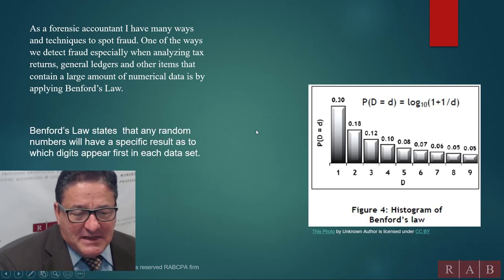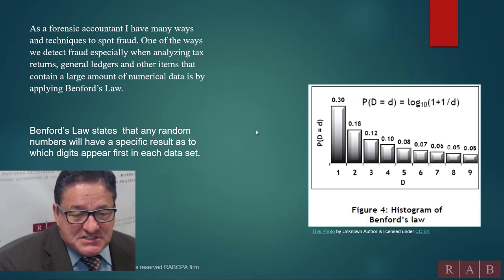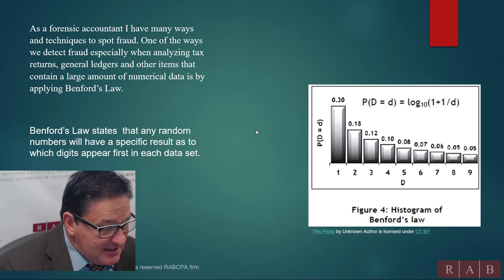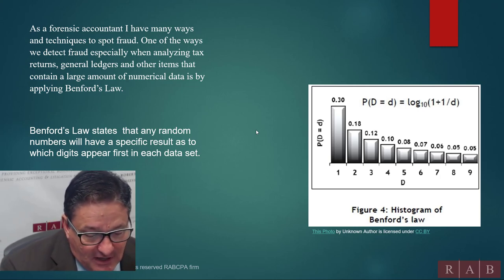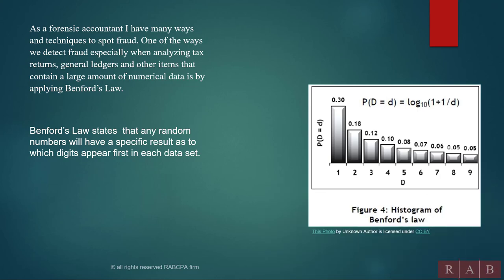And what the law basically states is that any random number will have a specific result as to which digit appears in each data set. And the way it does this is through what's called a base 10 logarithm, and it's very accurate. And when you apply this to a large amount of numbers, you should get something that looks like this bar chart right here.